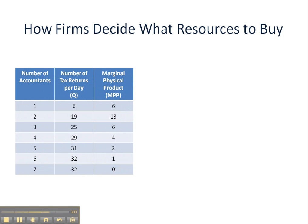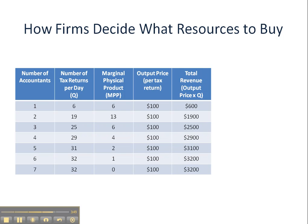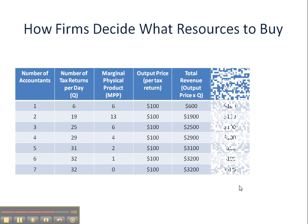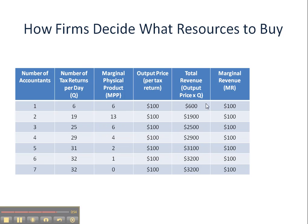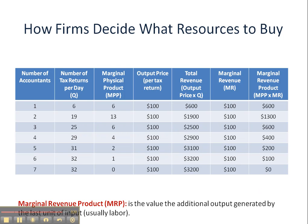The next thing we have to do is figure out Marginal Revenue Product. We're assuming a constant price for each tax return, so we're assuming a perfectly competitive environment to make it easier — we get $100 per tax return. All we're going to do is figure out the total revenue, which is just price times quantity, P times Q. Once we get that, we can figure out the Marginal Revenue, which is constant because we're assuming a perfectly competitive environment, so each additional unit sold gives us exactly the same revenue as the last.